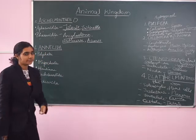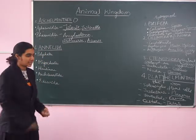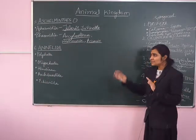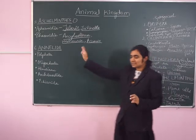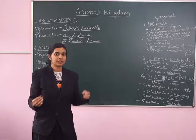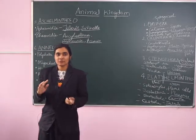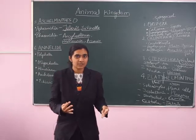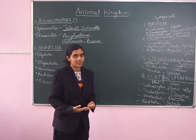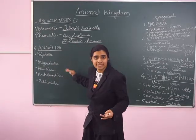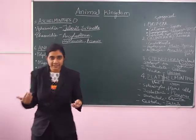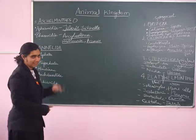Coming to Phylum Annelida. The Annelidan members represent a point from which evolution has truly begun, because they have a sort of circulatory system and a complete coelom — a true coelom. The organisms from this phylum onwards are coelomates, making them slightly more advanced organisms compared to the rest.